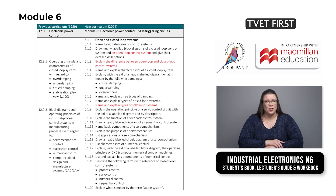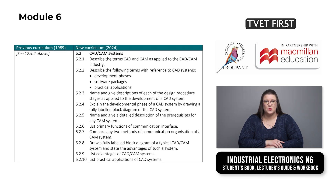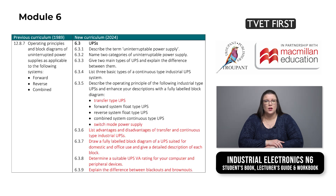Module 6 covers electronic power control and has 39 learning outcomes. The content now includes open loop systems and closed loop systems. The whole of section 6.2 is devoted to CAD or CAM systems. UPSs are also covered in much more detail in section 6.3.